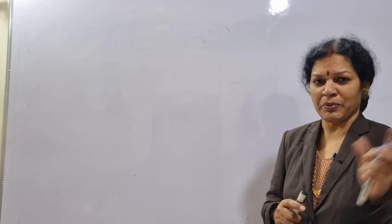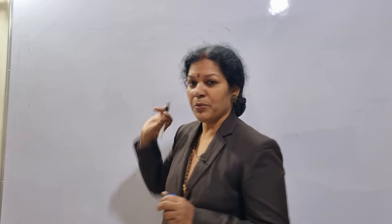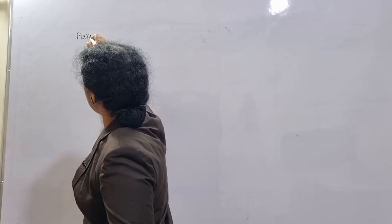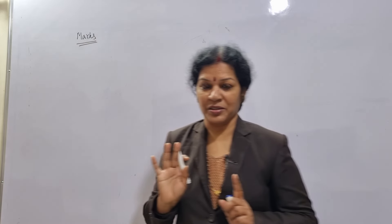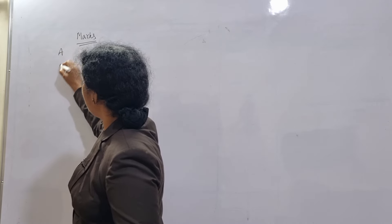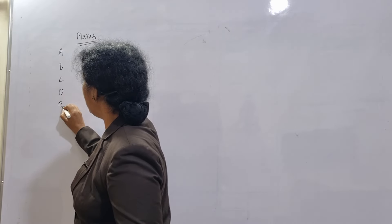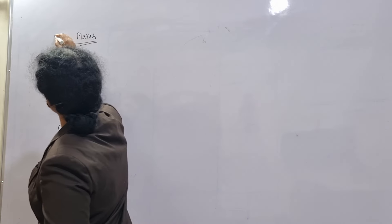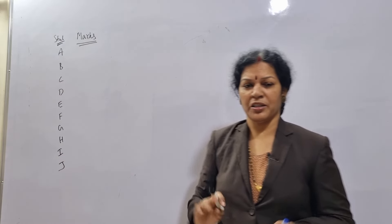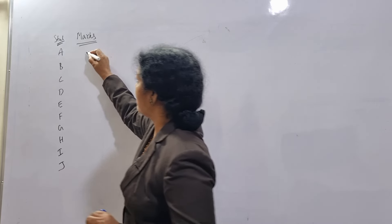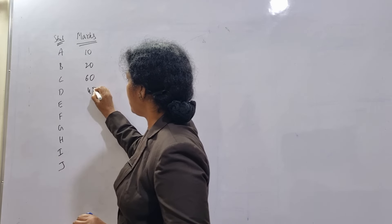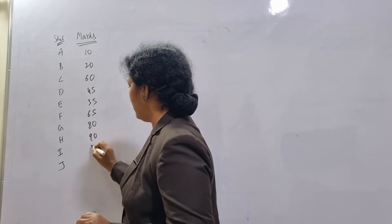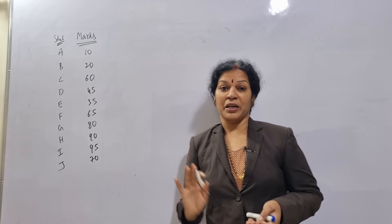First, number one: individual series. How do we identify it? Suppose the information is given to us like this — marks of 10 students. Student names A, B, C, D, G, H, I, J — these are the students' names or roll numbers. Their marks are given to us: 10, 20, 60, 45, 35, 65, 80, 90, 95, and 70.